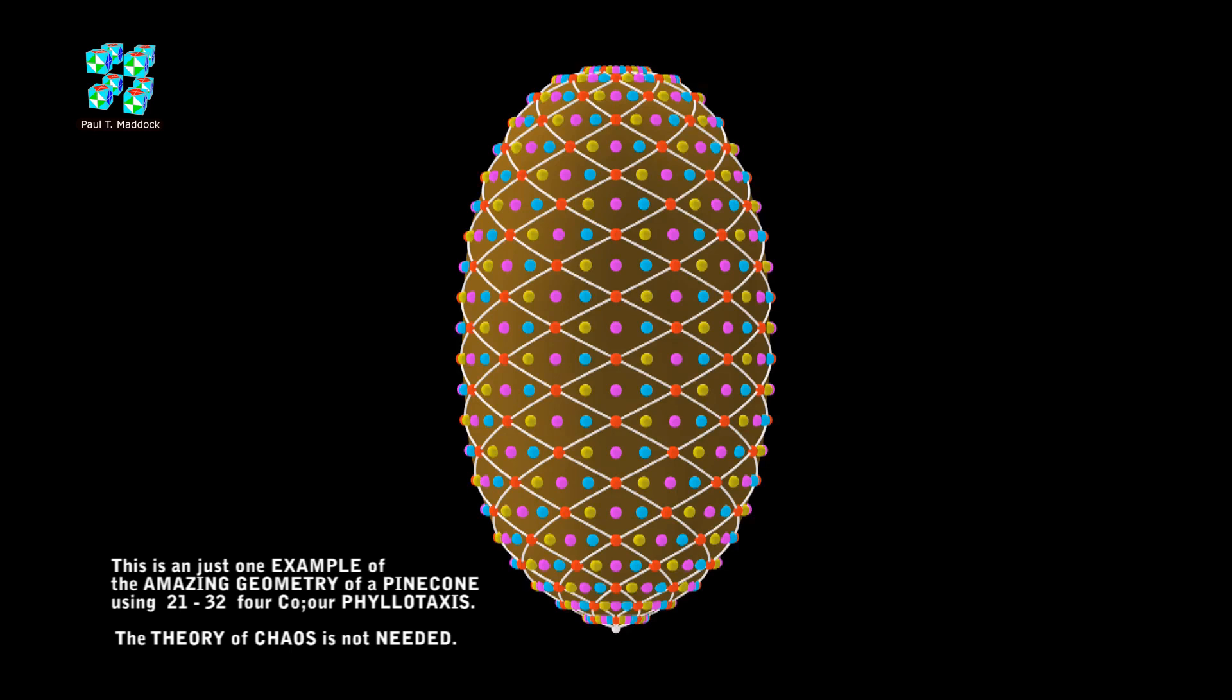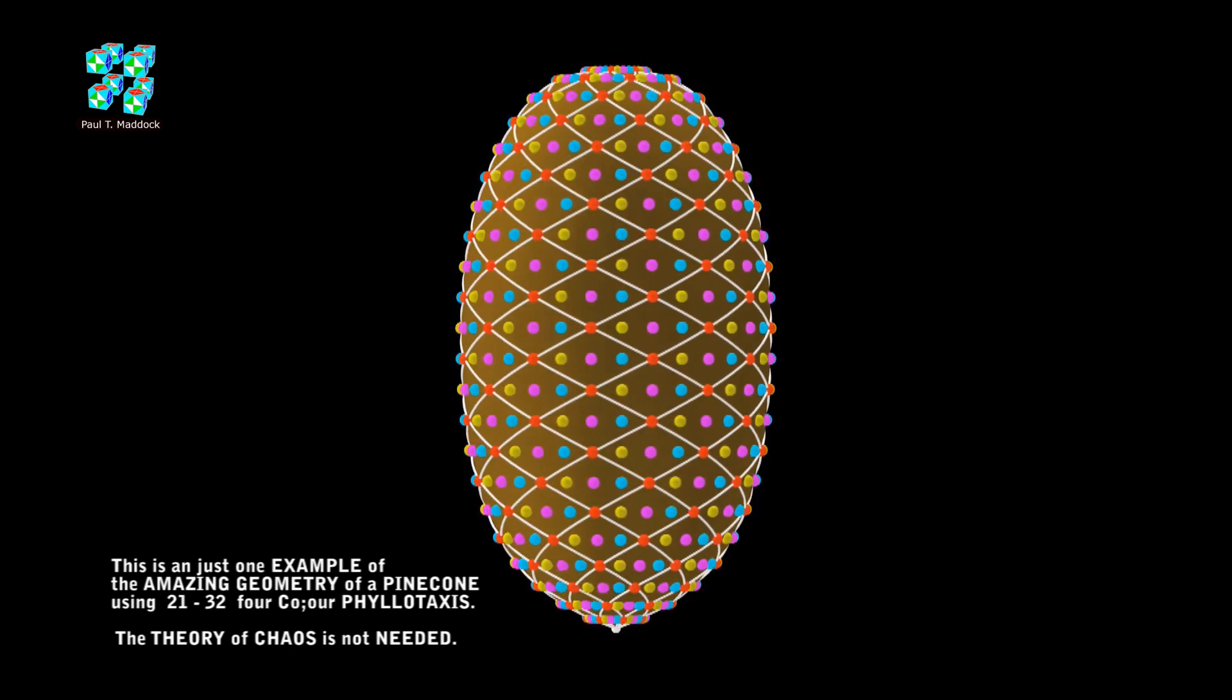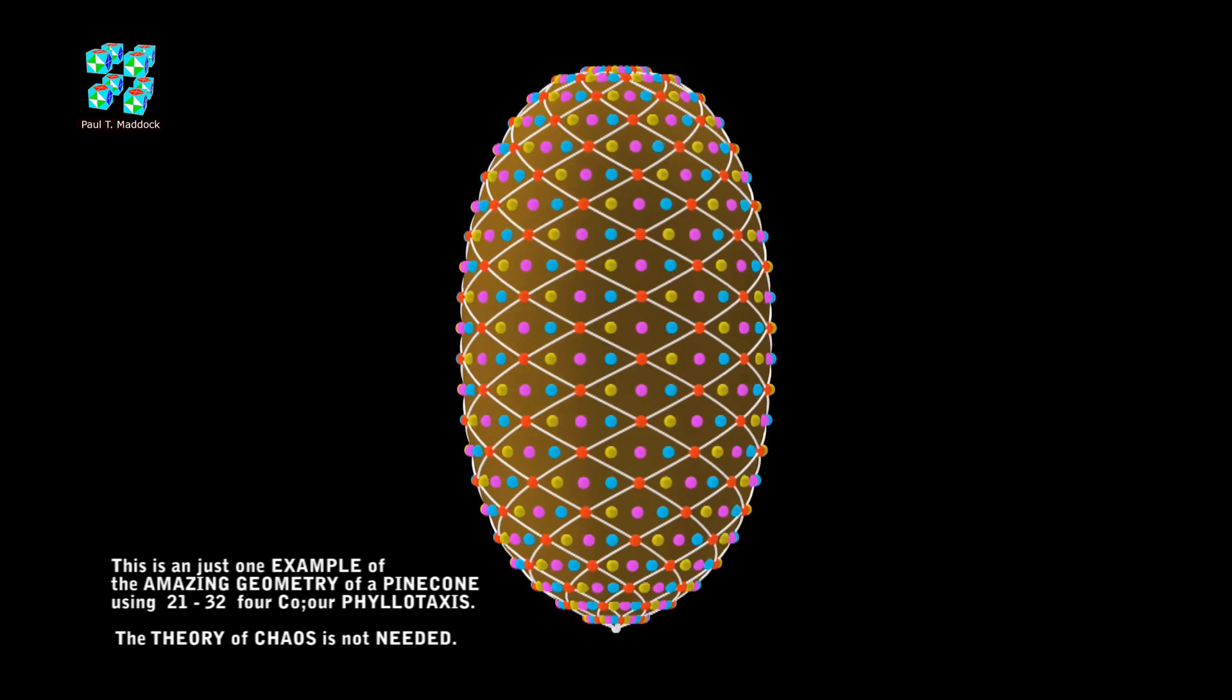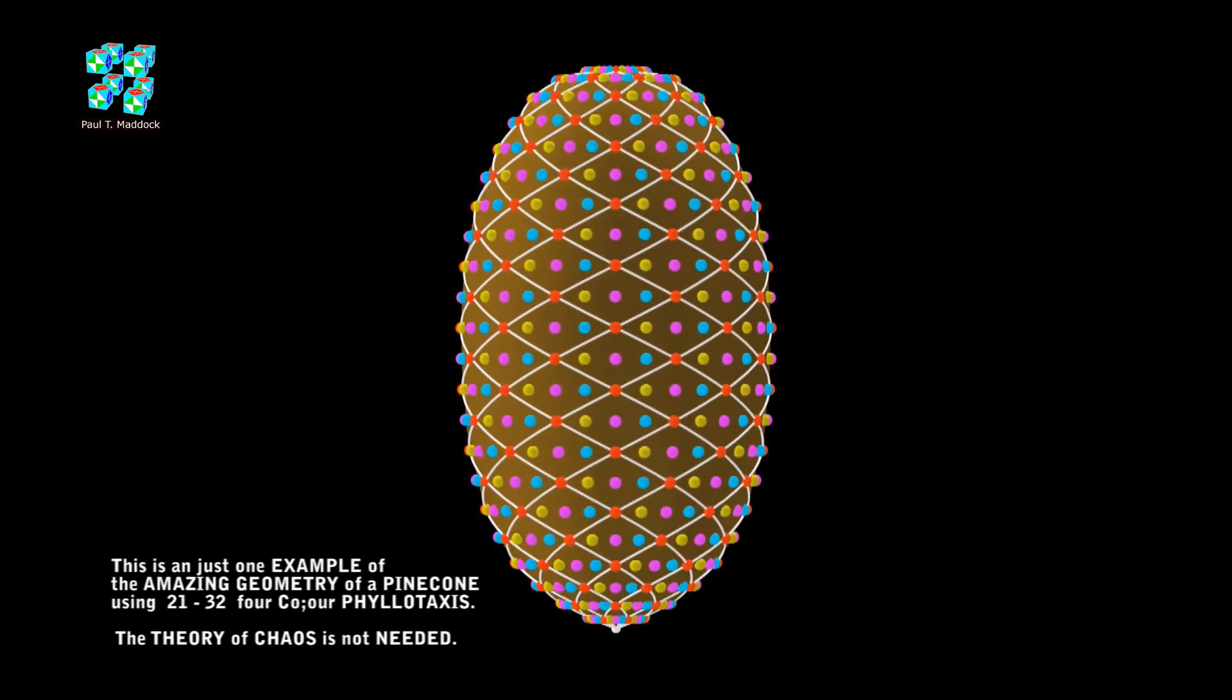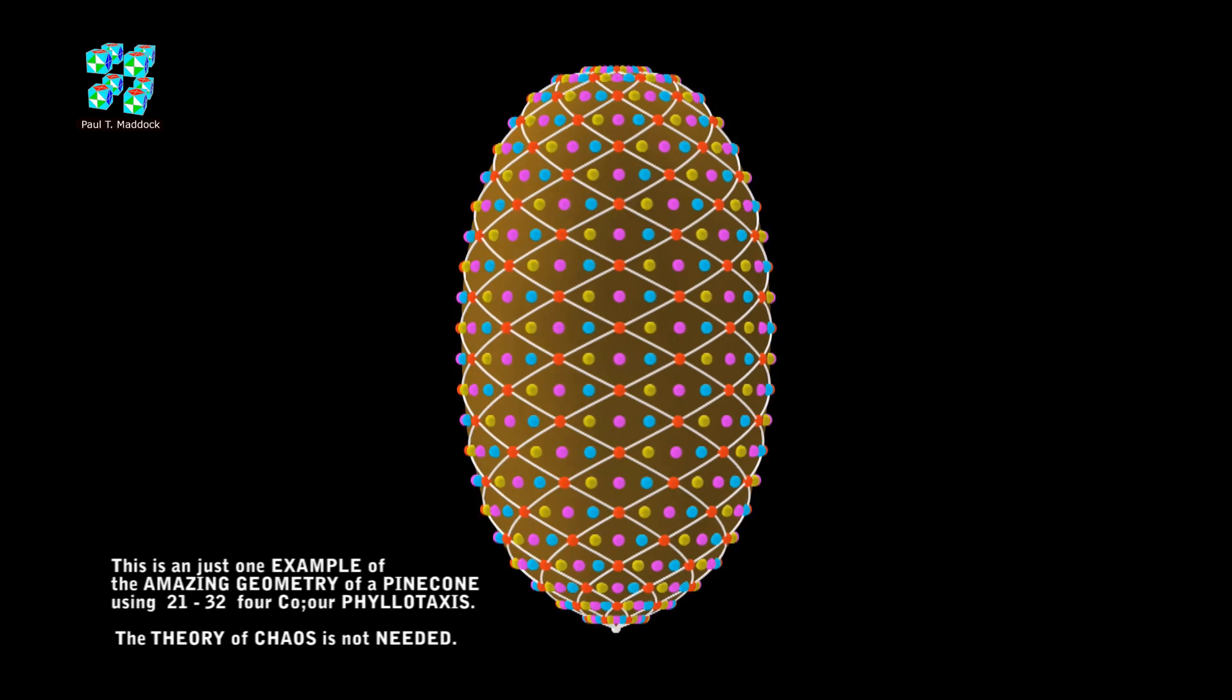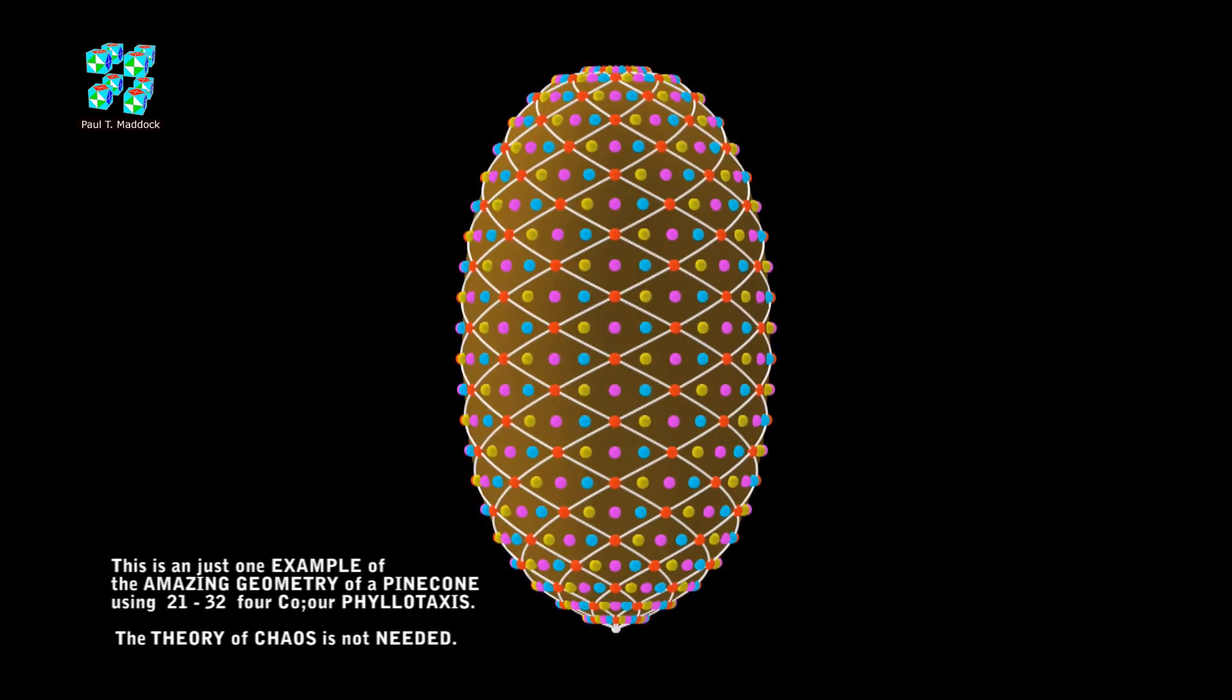So I think you can see that this type of four color array in Phyllotaxis is very important. It could almost be as important as the chaos theory. I showed earlier that this four color system can be applied to the pineapple, the strawberry, and the pine cones. Maybe we are just looking at the tip of an iceberg.